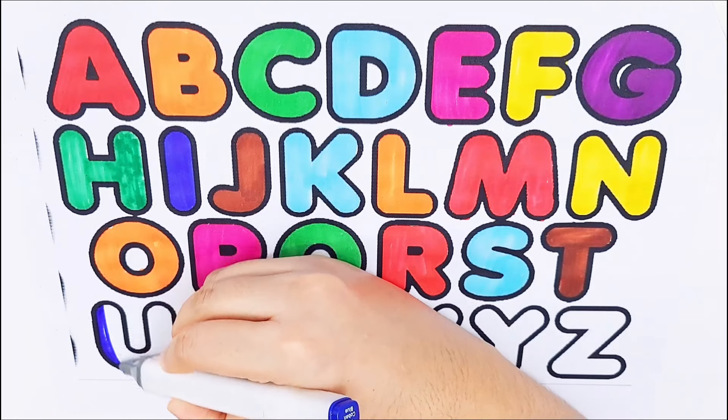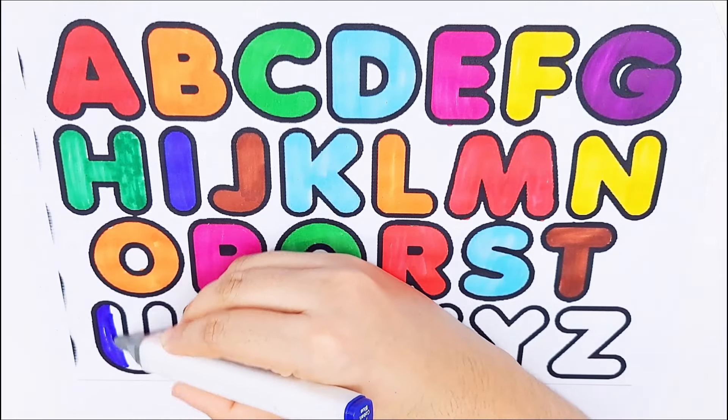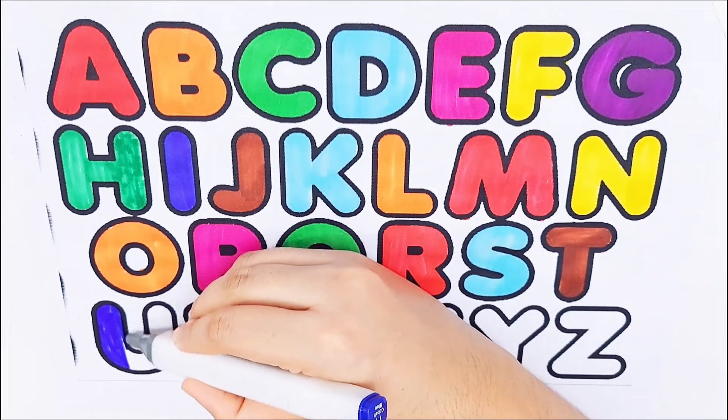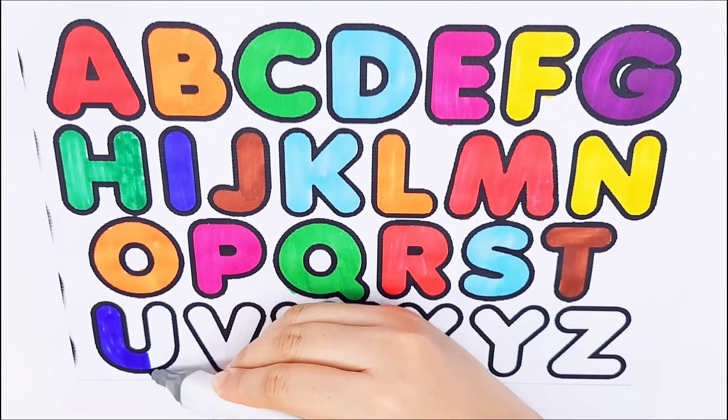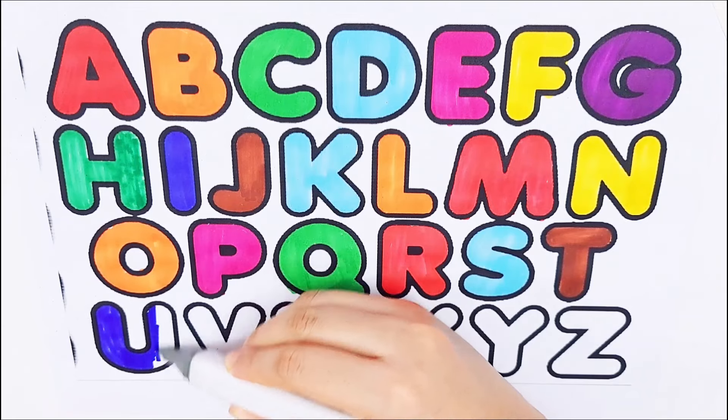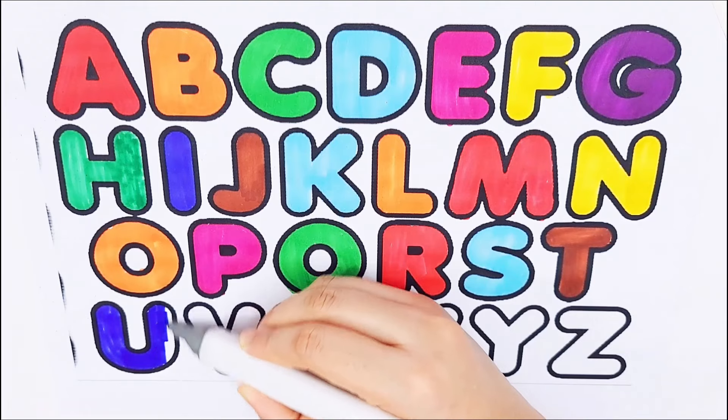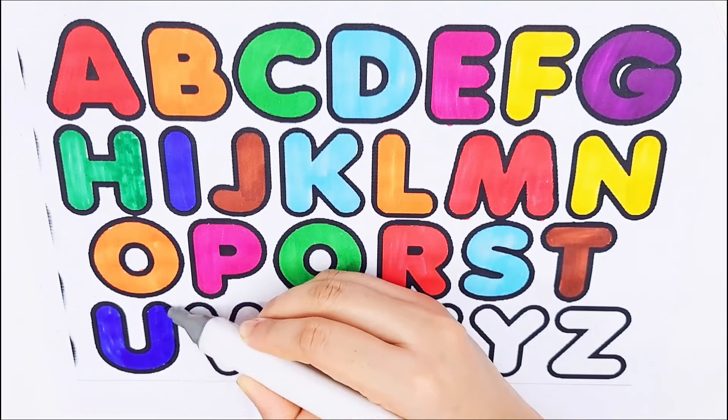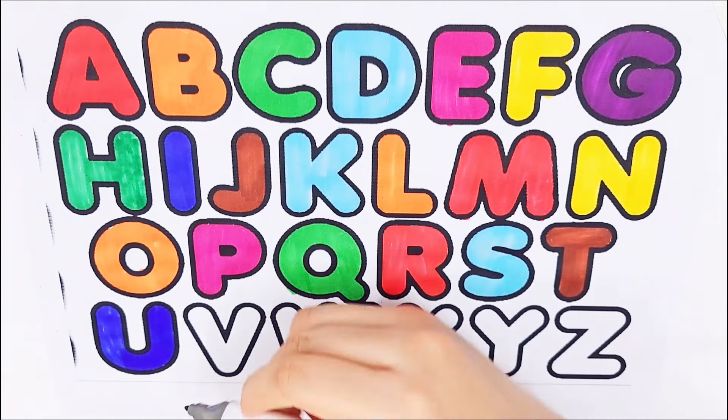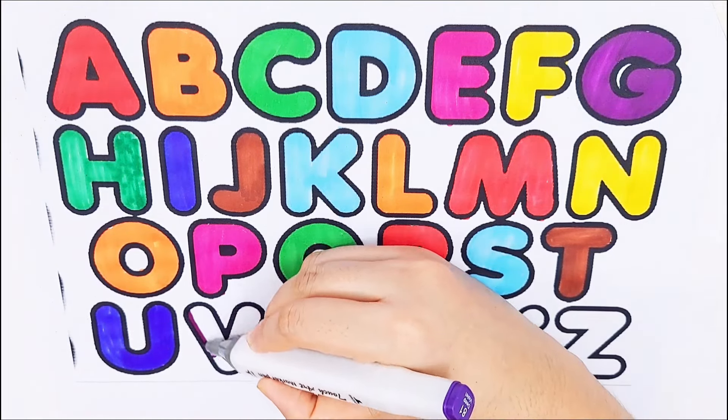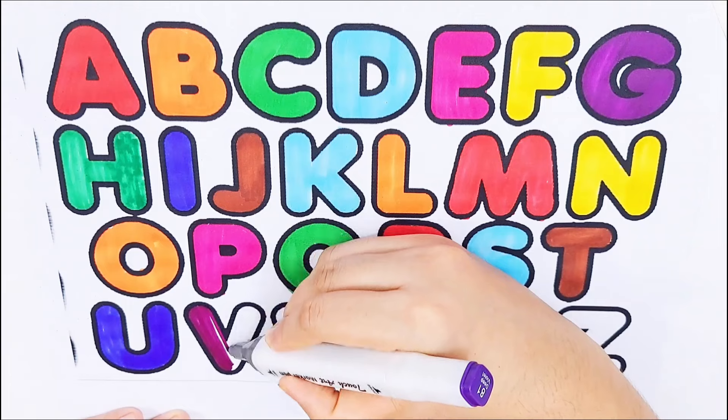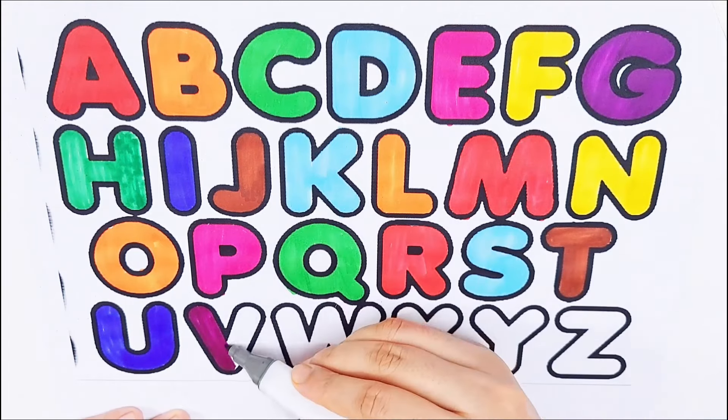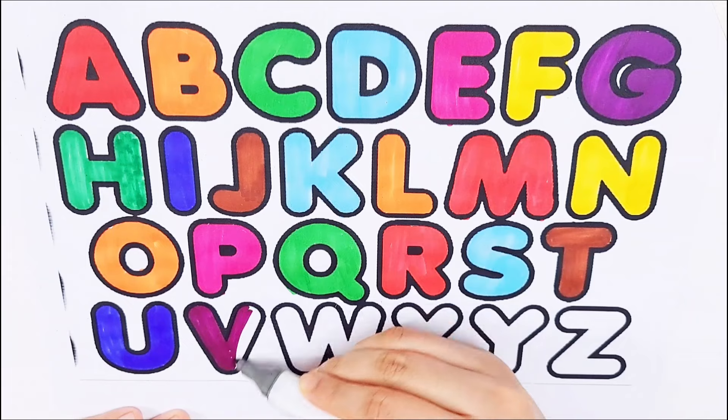Dark blue color, U, U for Universe. Violet color, V, V for Vanilla.